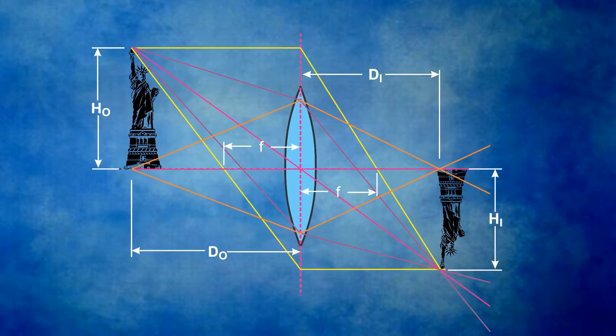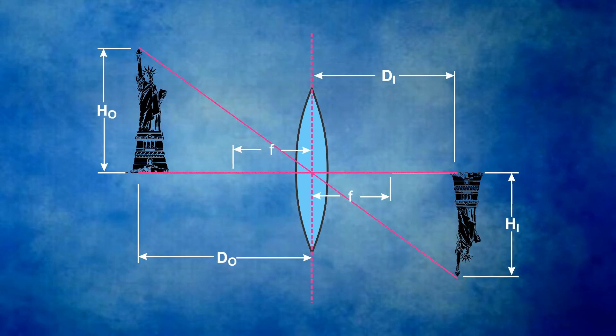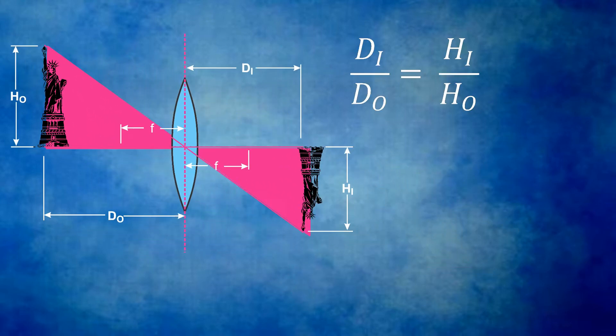If we look at the illustration, we can see two similar triangles. We know that the ratios of the sides of similar triangles are equal. Therefore, the ratio of the image distance to the object distance equals the ratio of the image height to the object height, which equals our magnification.